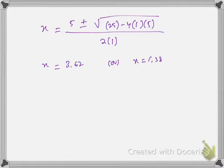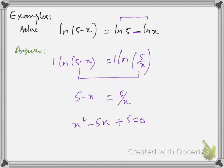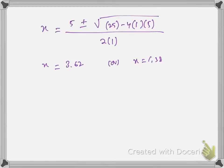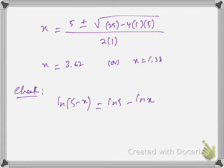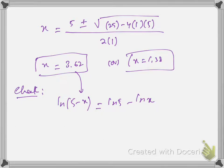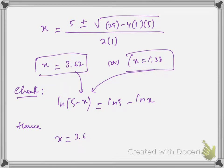Now we have to check our answers. Our answers must satisfy both the logs in the original equation. You just need to check the answers mentally. If we substitute 3.62, this log is positive and this is positive, so this answer is perfectly fine. If we substitute 1.38, both logs will be perfectly fine. You don't need to show the calculation for checking the answers, as you used to do in modulus functions — here you just check the answers mentally. So the required answers are x = 3.62 or x = 1.38.